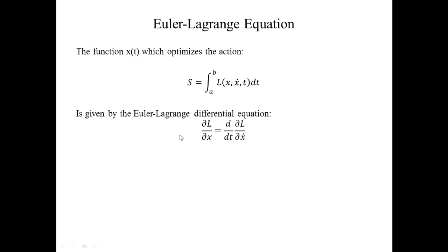The Euler-Lagrange equation says that you take the Lagrangian L, which depends upon position, velocity, and time, take the x derivative, and set that equal to the time derivative of the Lagrangian's velocity derivative. By plugging your Lagrangian into the Euler-Lagrange equation, you get a differential equation, and solving that gives you x(t), your equation of motion.